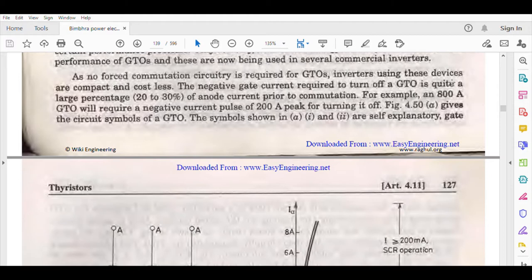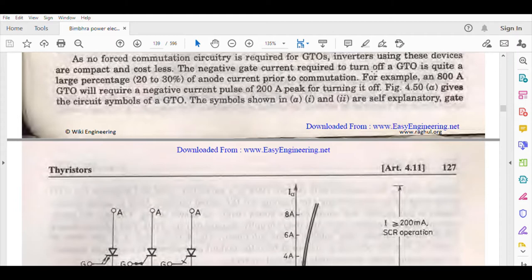The negative gate current required to turn off a GTO is quite a large percentage of anode current prior to commutation. For example, an 800 ampere GTO will require a negative pulse of 200 amperes, which is huge in terms of percentage.